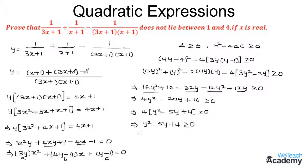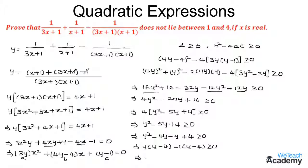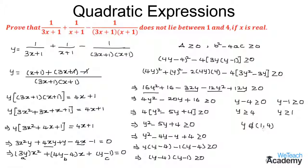Factorizing this inequality: y² - 5y + 4 factors as (y - 4)(y - 1) ≥ 0. Taking y as a common factor from y² - 4y and -1 from the remaining terms, we get (y - 4)(y - 1) ≥ 0. This means y - 4 ≥ 0 or y - 1 ≤ 0, that is y ≥ 4 or y ≤ 1. So we can conclude that the values of y do not lie between 1 and 4.